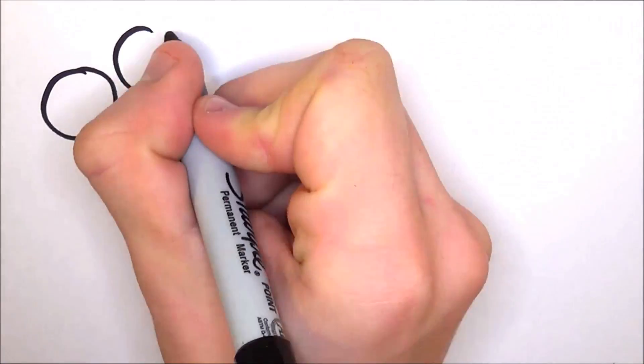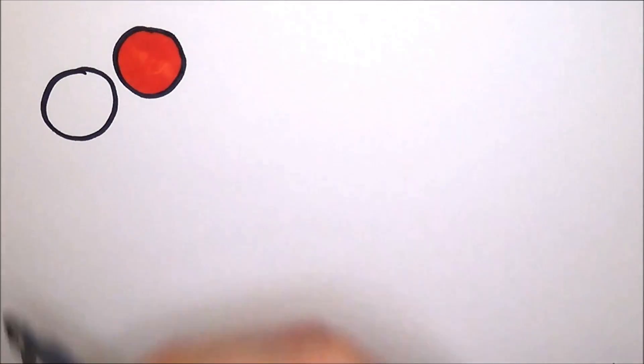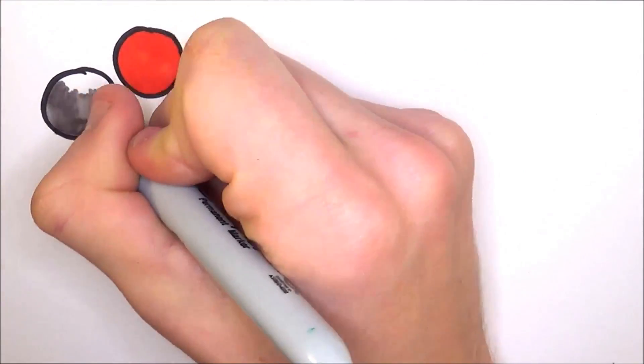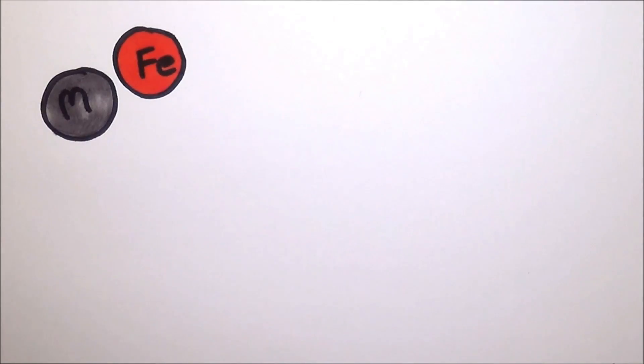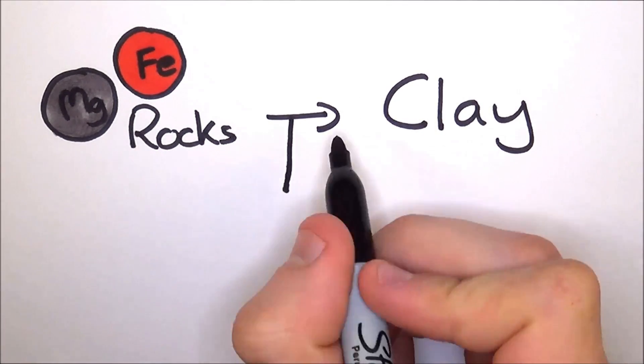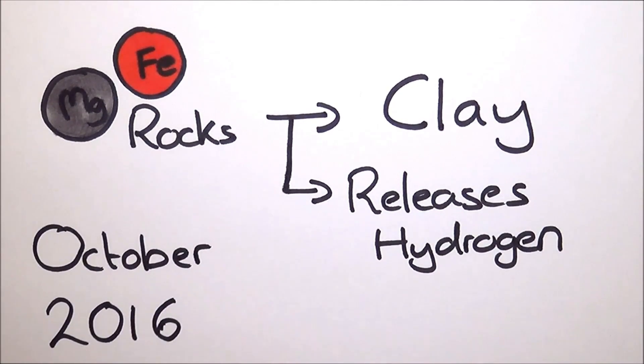This is where rocks rich in magnesium and iron turn into a clay type material. This releases hydrogen, which is useful fuel for bacterial life. Cassini is set to make its final pass in October 2016, when this video is being made, where it will test for the presence of hydrogen to find out whether their theory of serpentisation is true.